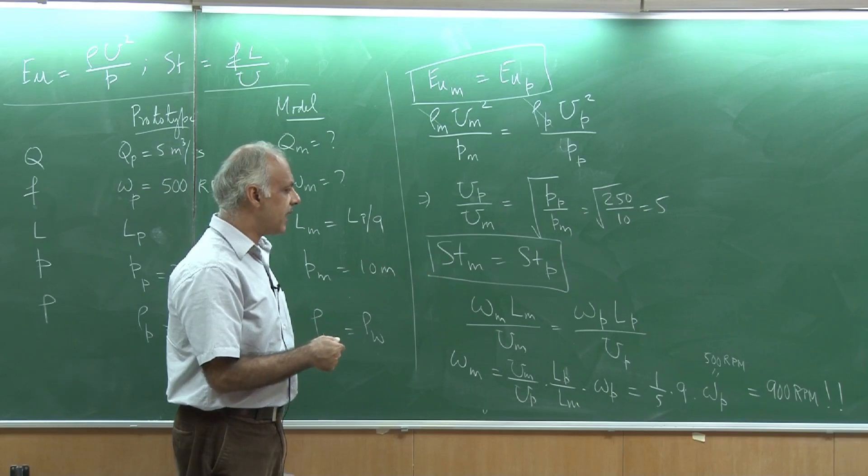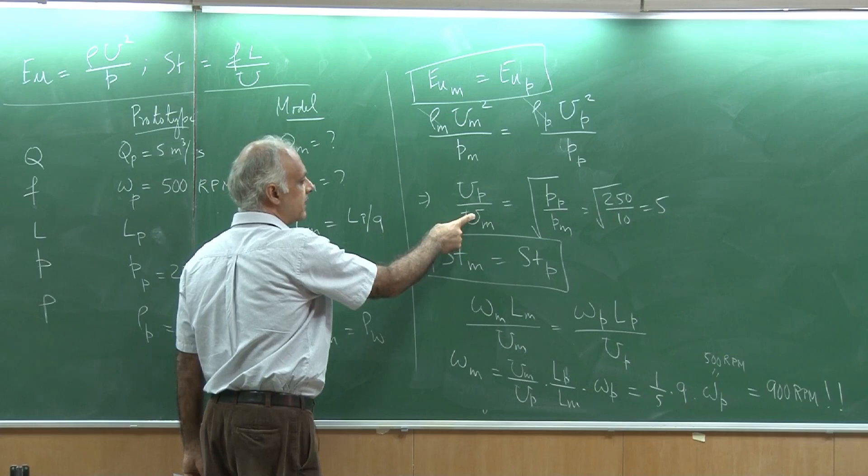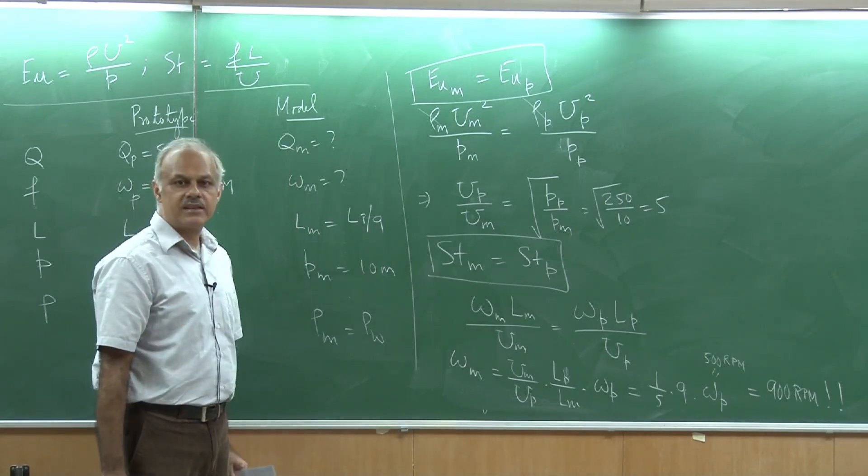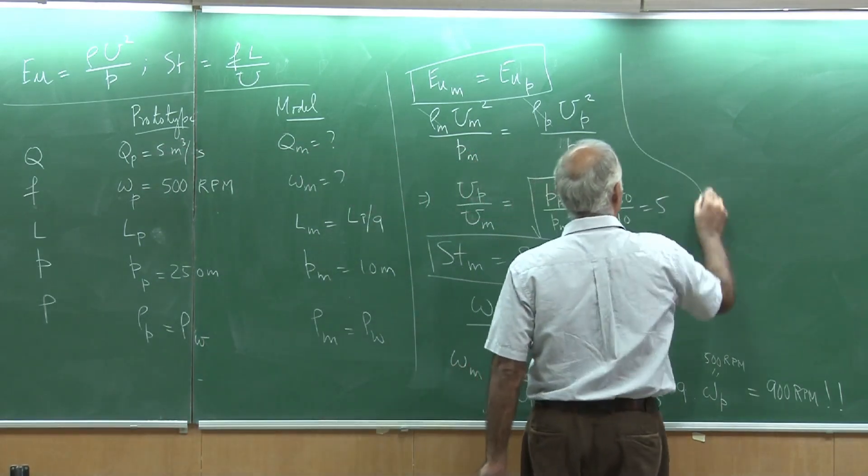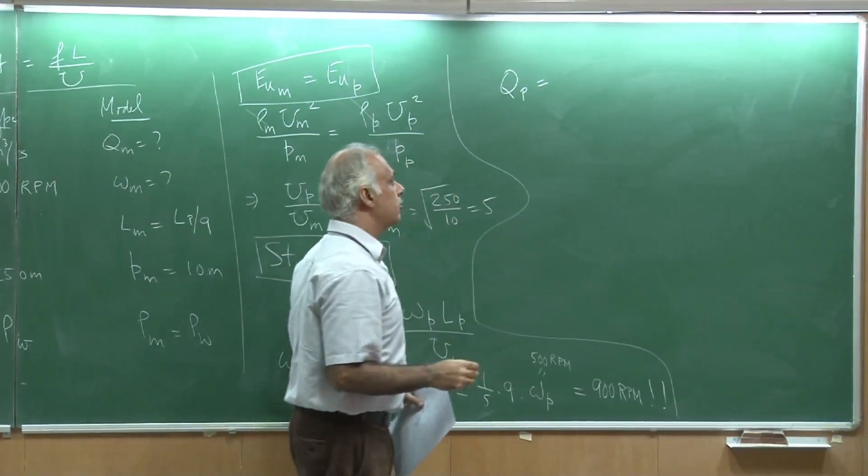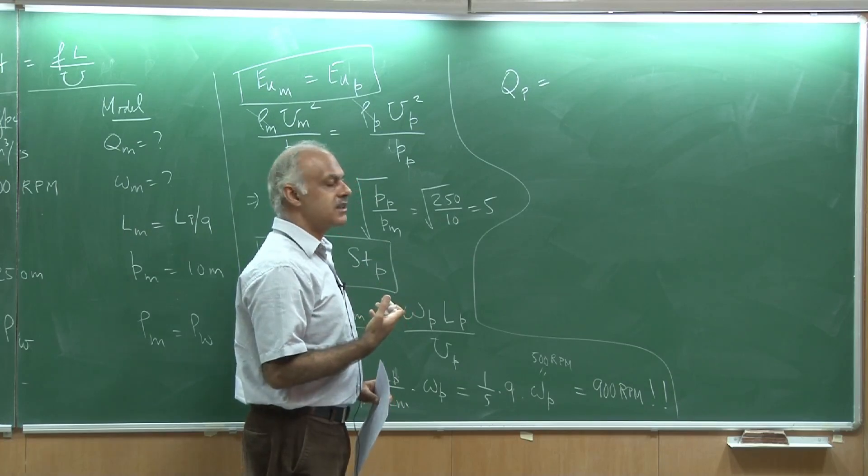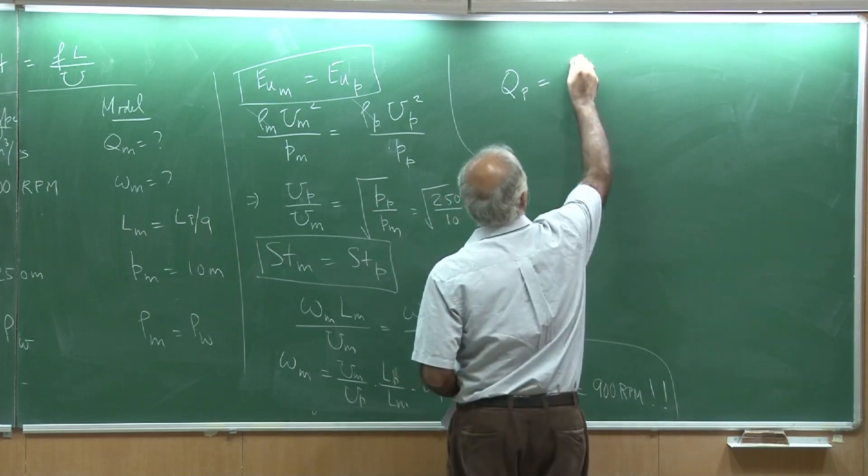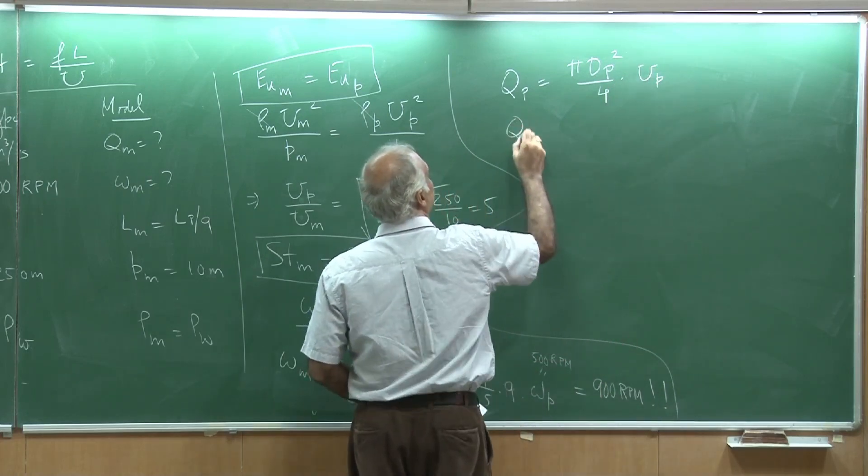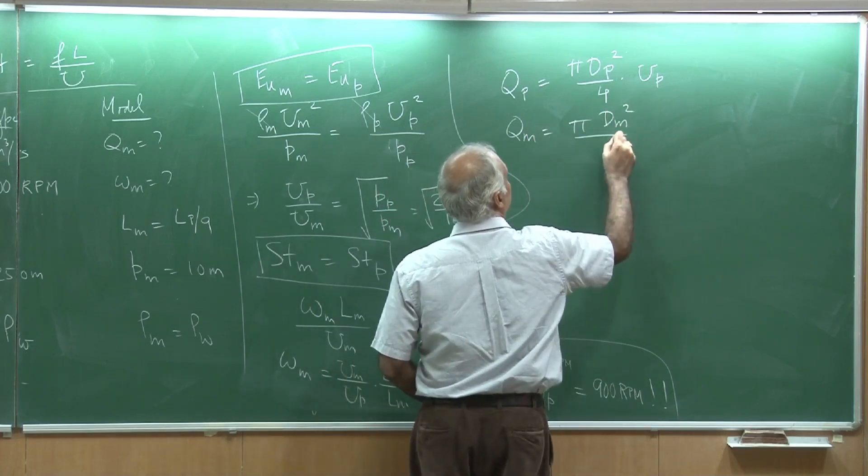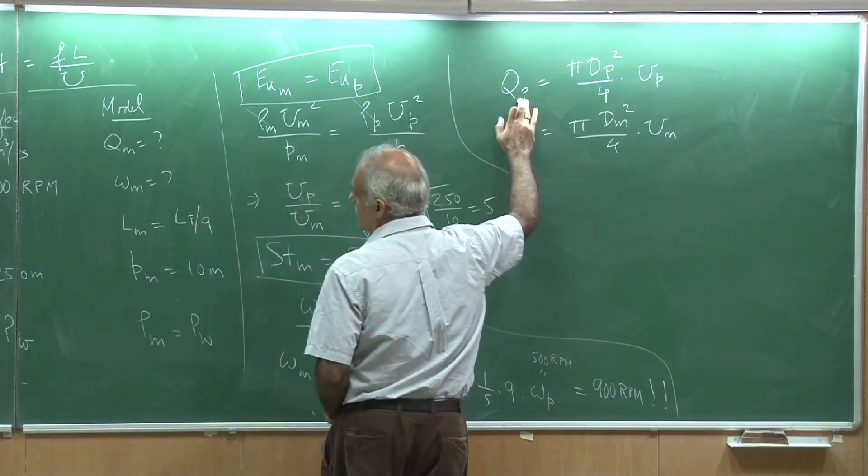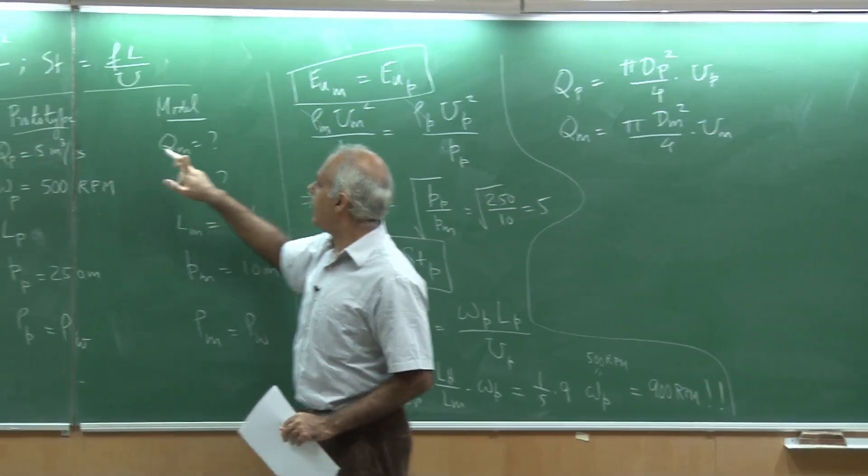We have already ensured geometric similarity, and by ensuring the model speed or the speed of water through the model and the spin rate of the pump, the model pump, now the dynamic similarity is ensured. What would be the flow rate? The flow rate, as you know, the Q for the prototype would be the area, the cross-sectional area of the pump, times the average flow speed through it. So I could write this as π dp²/4 times the speed through it which is up. And similarly, Q model would be π d model²/4 times the model.